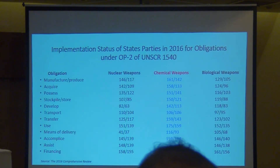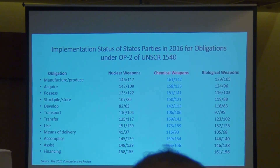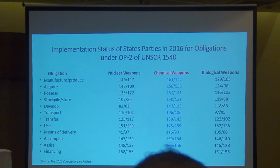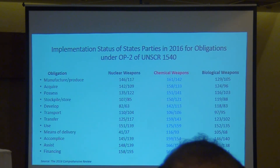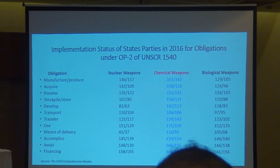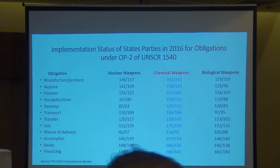There has been a sizeable increase to 175 in the number of states which have a legal framework in place to prohibit the use of chemical weapons by non-state actors, compared with 150 states in 2011. Similarly, 161 states have in place the legal framework to prohibit the manufacture of chemical weapons by non-state actors, compared with 135 in 2011.